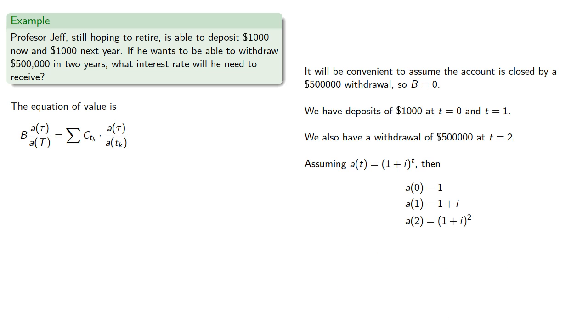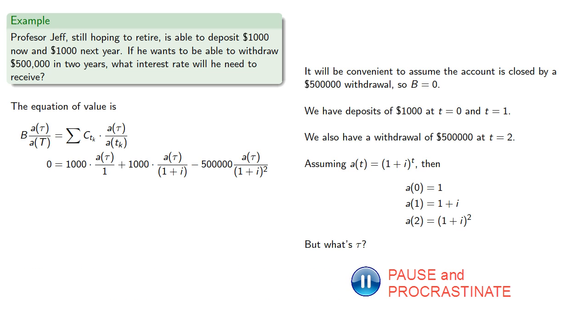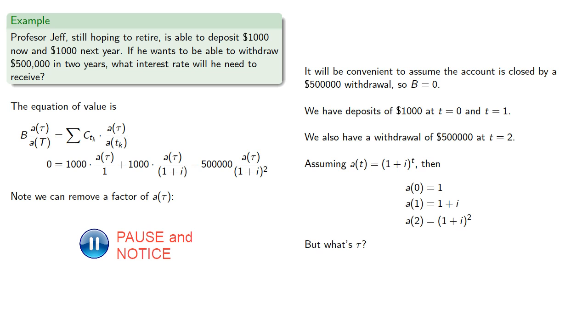We have everything except for a(tau), and so we need to know what's tau. Well, we'll employ the time-honored tactic of procrastination. Note we can remove a factor of a(tau) from our equation, and we multiply through by (1 plus i) squared we get.